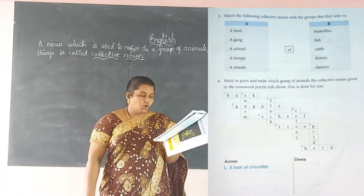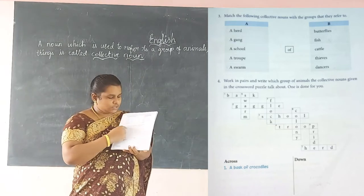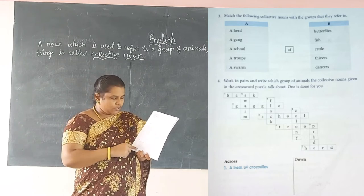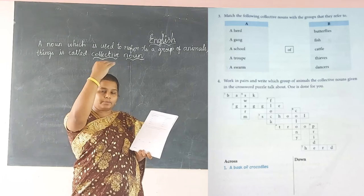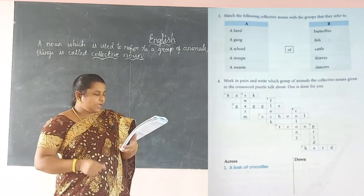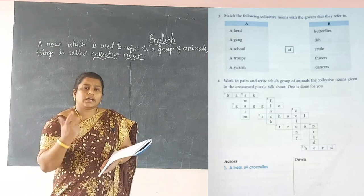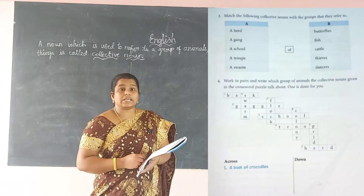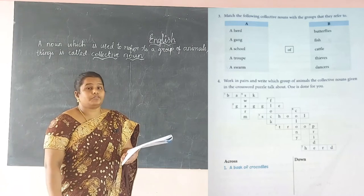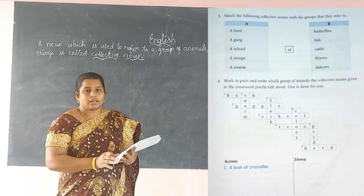This is your homework. In the crossword puzzle, for the 'across' type write across and for 'down' type write from top to bottom. Write the full collective noun form. For example: a basque of crocodiles, and for the next across clue, use the word 'gaggle' — for geese we use the word 'gaggle,' so write 'a gaggle of geese.' This is your homework — find the answers and write them.